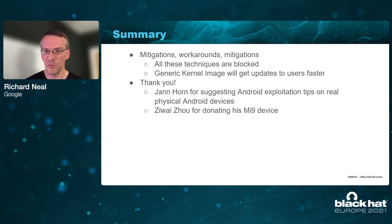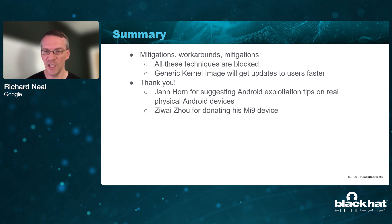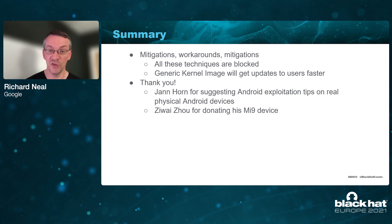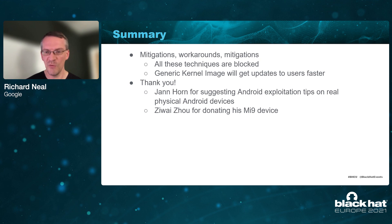Xingyu encountered a number of problems developing the exploit, but with a lot of work, heap manipulation, and help from others, he overcame them. The workarounds were themselves defeated by further mitigations, which you can find on current Android devices. The generic kernel image project means kernel updates get onto user devices faster, resulting in better protection for Android users. Thank you to Jan Horn for discussing exploitation techniques and suggesting workarounds and further mitigations, and to ZY Joe for donating his Mi9 phone for exploit development and testing. Thank you for watching this presentation.